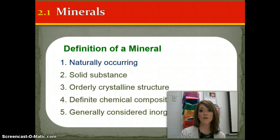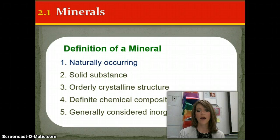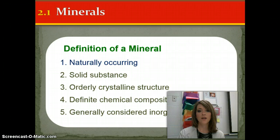The five characteristics are: they're naturally occurring, they're solids, they have a crystal structure, a definite chemical composition, and they're generally considered inorganic. We're going to go through each one in detail.